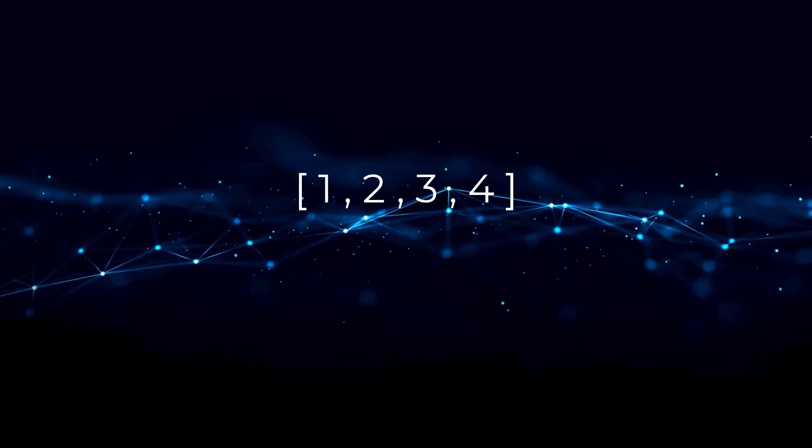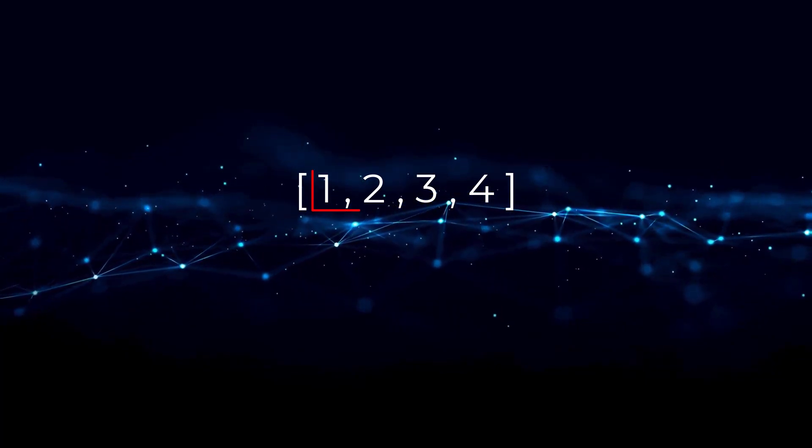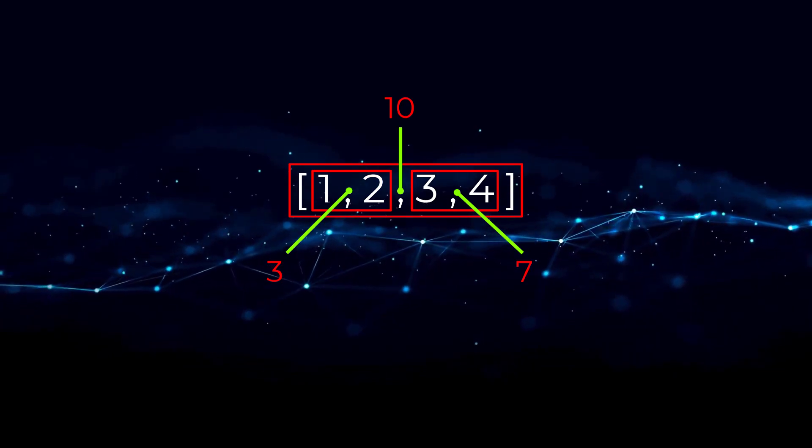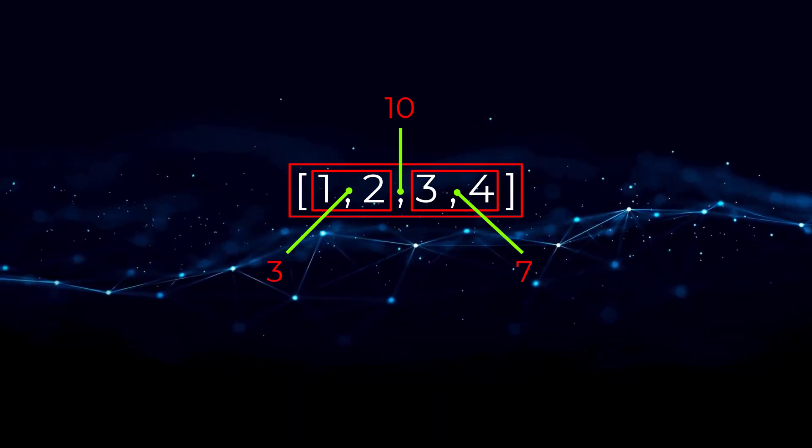For this problem, we are given an integer array and we need to find the contiguous subarray which has the largest sum and return that sum. So first of all, what is a contiguous subarray anyway?